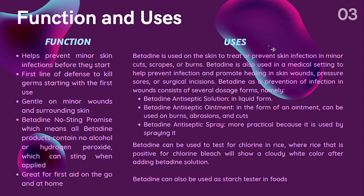The uses of Betadine: Betadine is used on the skin to treat or prevent skin infection in minor cuts, scrapes, or burns. It is also used in a medical setting to help prevent infection and promote healing in skin wounds, pressure sores, or surgical incisions. As a prevention of infection in wounds, Betadine consists of several dosage forms: Betadine antiseptic solution in liquid form; Betadine antiseptic ointment, which can be used on burns, abrasions, and cuts; and Betadine antiseptic spray, which is more practical because it is applied by spraying. Additionally, Betadine can be used to test for chlorine bleach in rice — rice positive for chlorine bleach will show a cloudy white color after adding Betadine solution — and as a starch tester in foods.